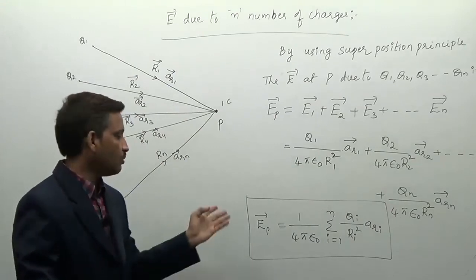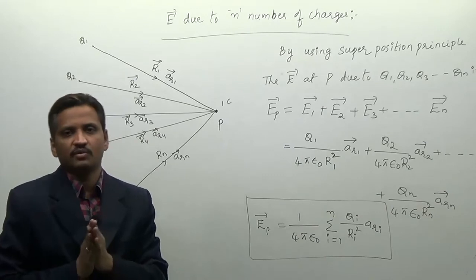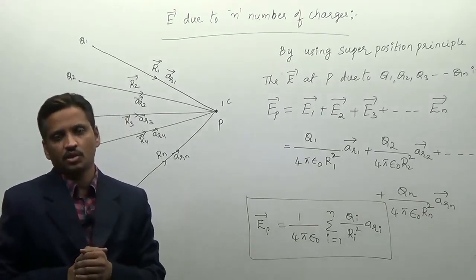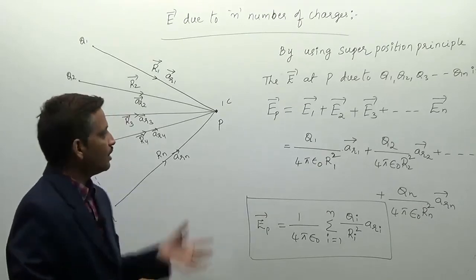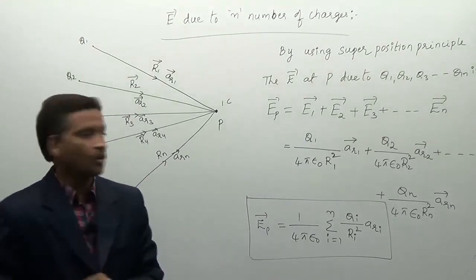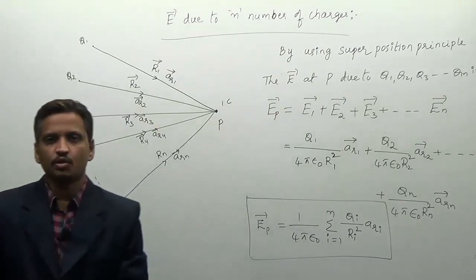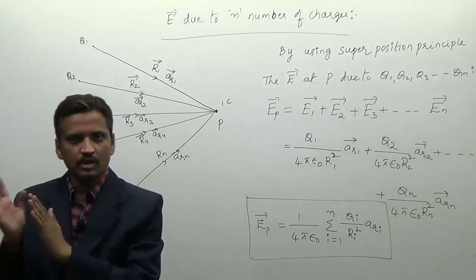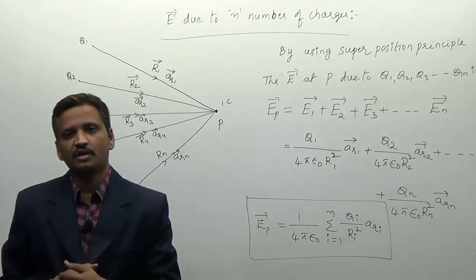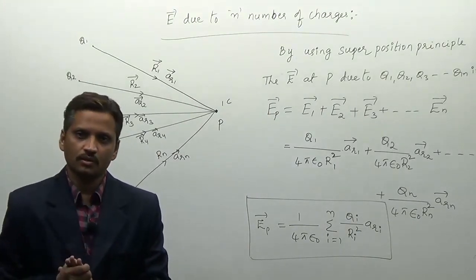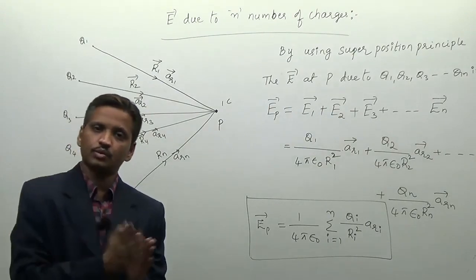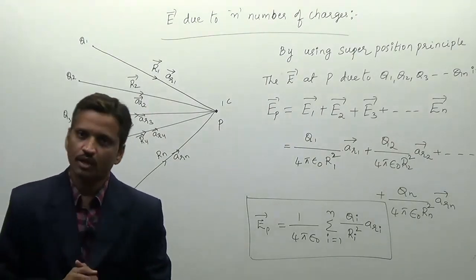Most problems will be based on finding E at a point due to N number of charges using superposition, the same way we do problems on force. To summarize: E due to a single point charge Q is Q/(4πε₀r²) × AR, where AR is the direction of the electric field intensity, and units are newtons per coulomb or volts per meter. Next, we are going to cover different types of charge distributions, E due to an infinite line charge, E due to an infinite sheet of charge, and many other concepts.